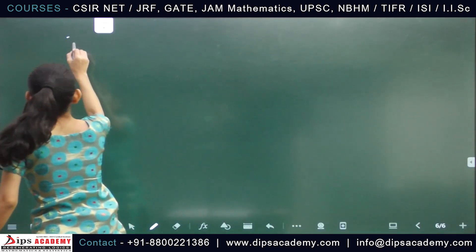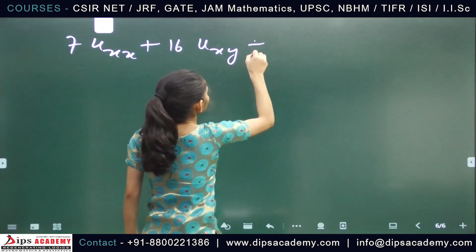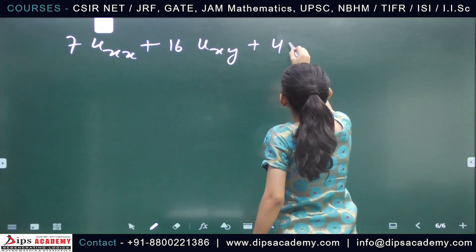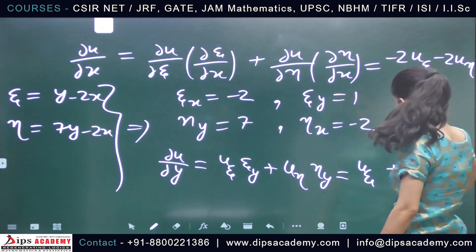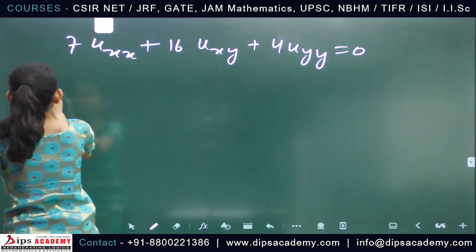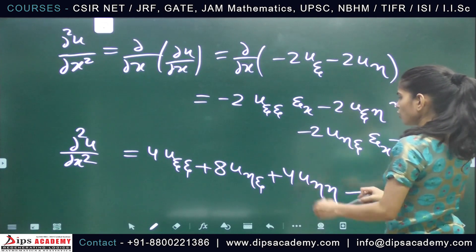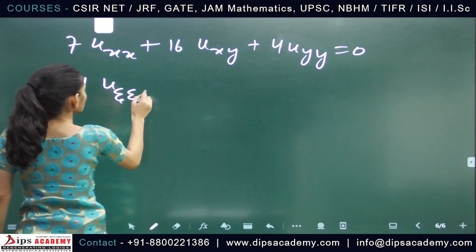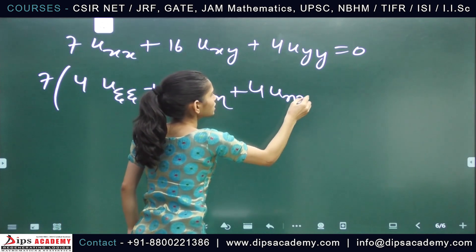The original PDE is 7u_xx + 16u_xy + 4u_yy = 0. Now substituting the expressions we found: the u_xx term gives 7 × (4u_ξξ + 8u_ξη + 4u_ηη) = 28u_ξξ + 56u_ξη + 28u_ηη.